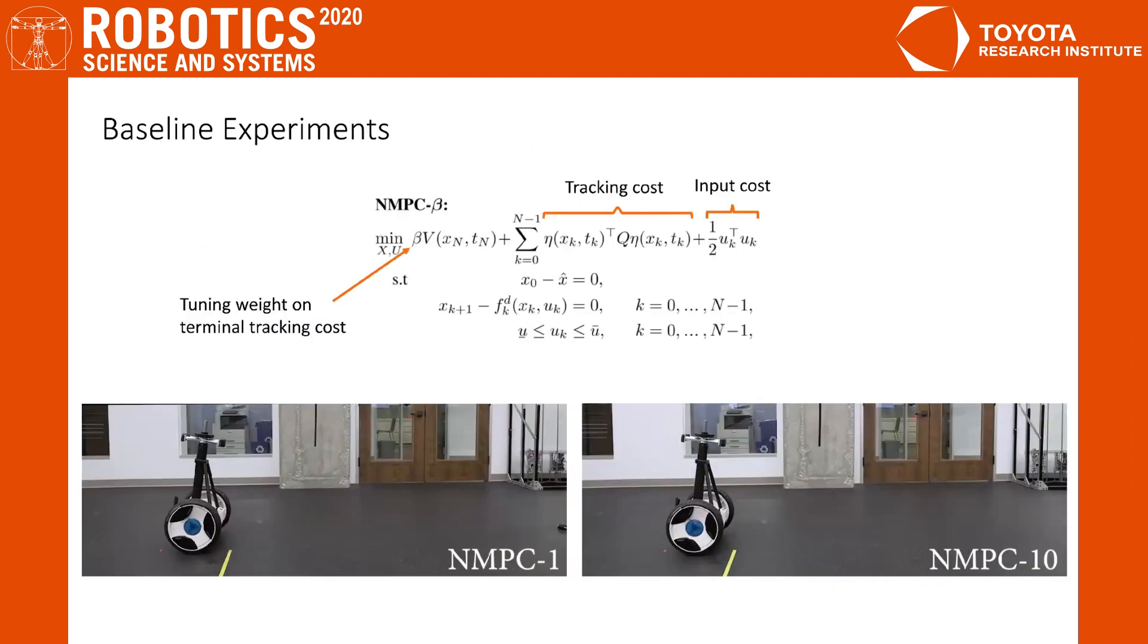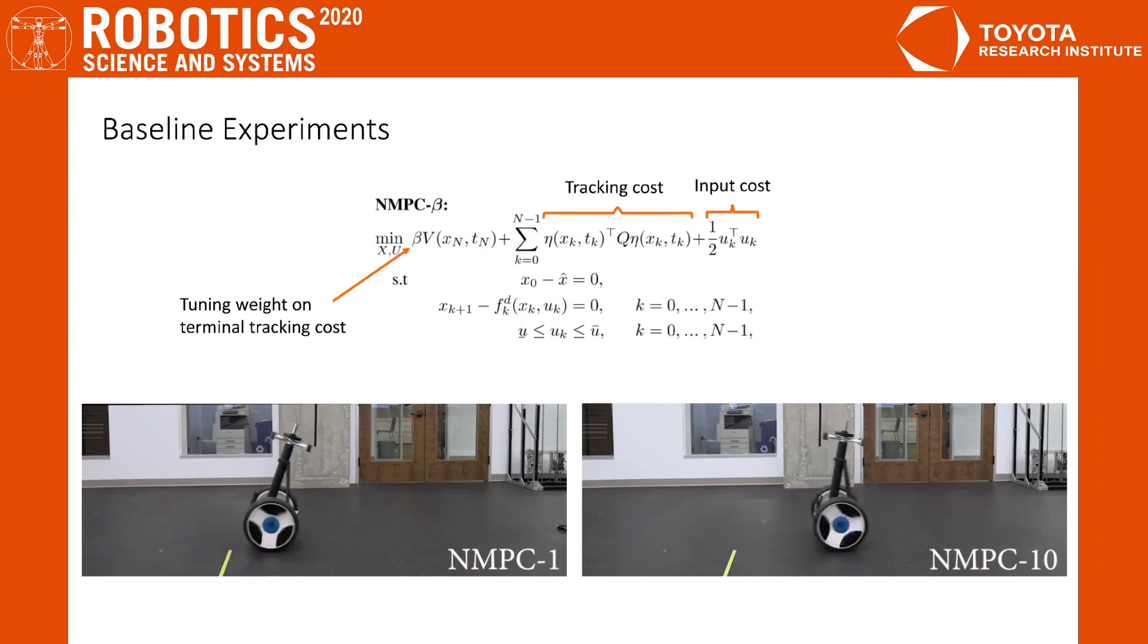As a baseline, we create a typical MPC formulation with a tracking cost, an input cost along the horizon, and a terminal cost where the relative weight is to be tuned. We see that on the left, where beta equals 1, the controller fails to stabilize the system. But on the right, with beta equals 10, the controller performs really well.